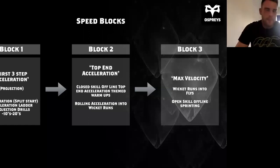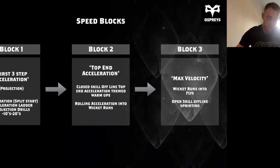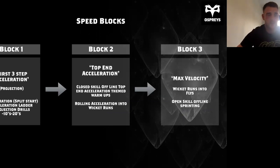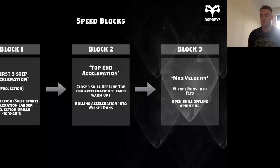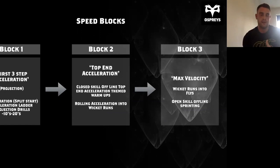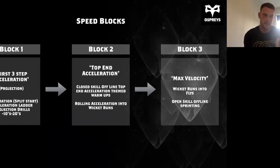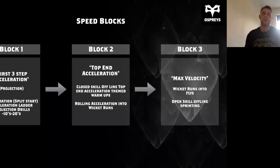Our speed blocks ensure everything we're training — speed work, gym work, and on-field work — underpins the same goal for that block. In block one, with first three-step acceleration, we use a lot of acceleration ladder drills and projection drills. In our game, players are continuously having to accelerate — whether that's ball carry or coming off a line of defence — so we need to make them as efficient as possible at those first three steps. The biggest thing we look at is manipulating shin angle, so getting projection and driving horizontally over those first three steps.